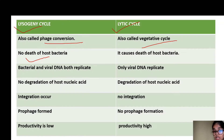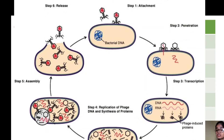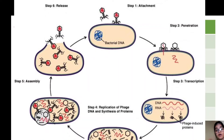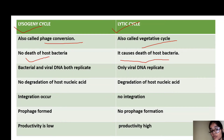But in the lytic cycle, the viral DNA does not integrate into the host cell DNA. Instead, the viral particles replicate inside the bacteria, and when the viral particles are well assembled and mature, they become so many, and the bacteria undergo lysis.